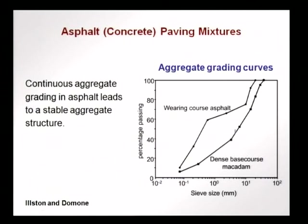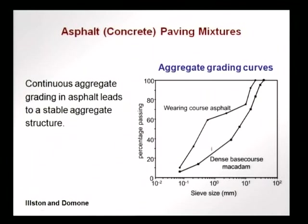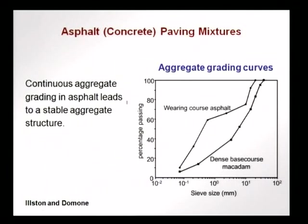Two aggregate grading curves from Ilston and Domon show: the top curve is a wearing course asphalt, which is the top surface of a pavement where you want a smooth ride and a stable aggregate structure with not much mobility. A base course macadam can have a dense material with less fine and more coarse material to give density and packing. Depending on where the asphalt is used — whether in the top or bottom layer — the grading will change. Generally, we want a continuous aggregate grading leading to a dense gradation giving a stable aggregate structure.